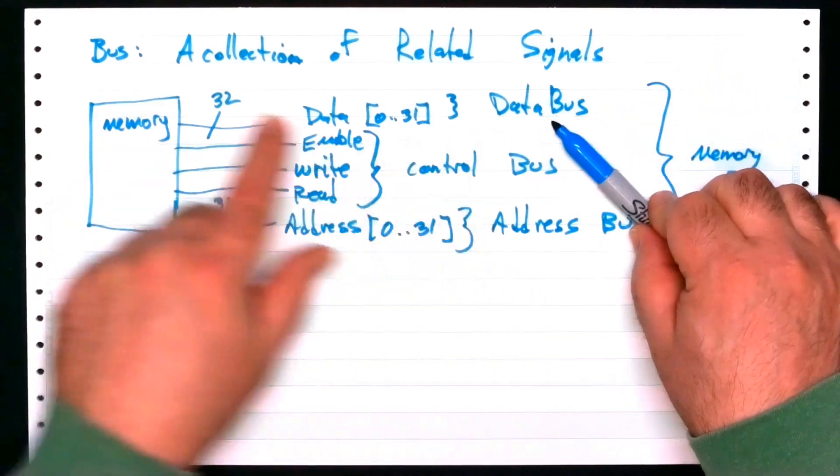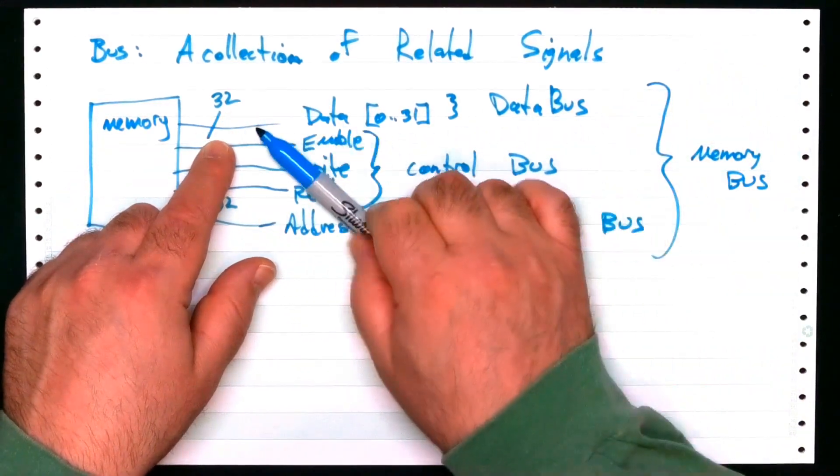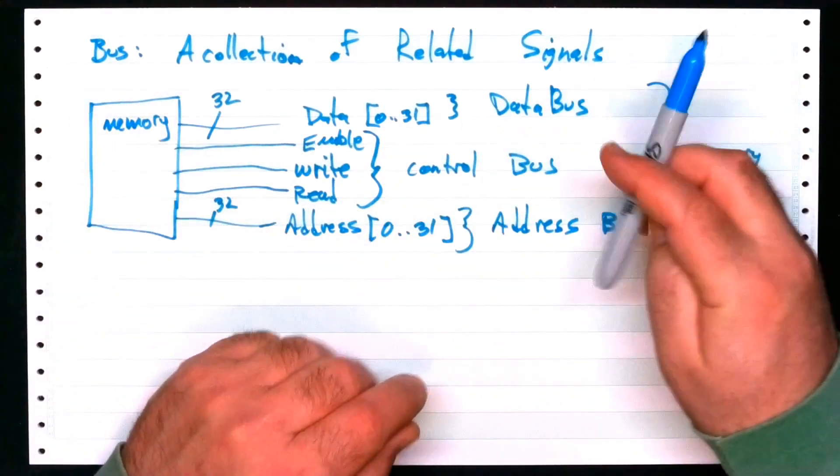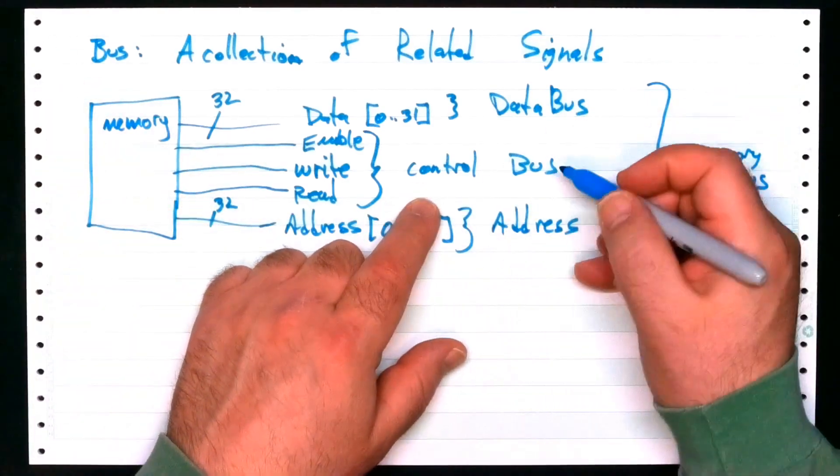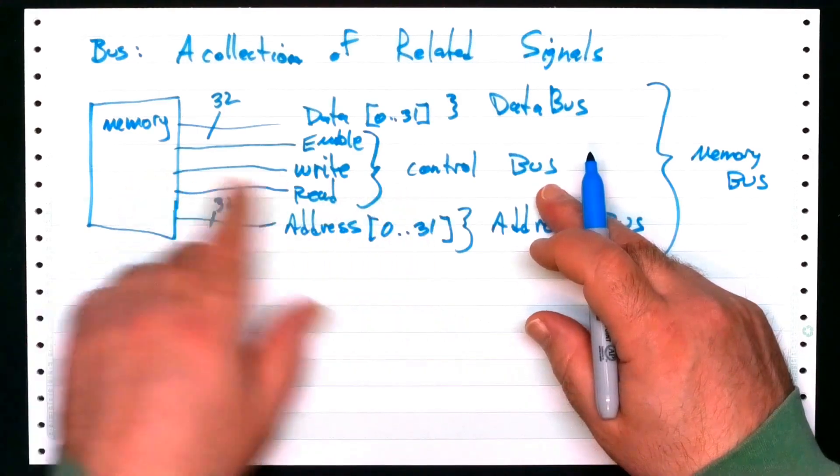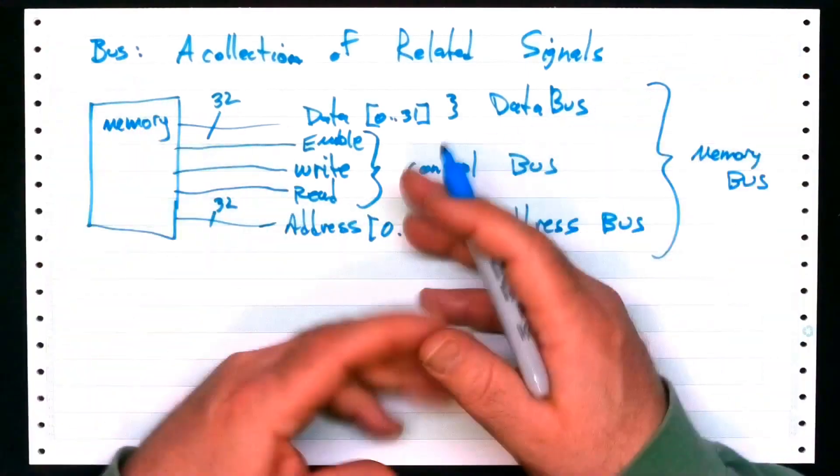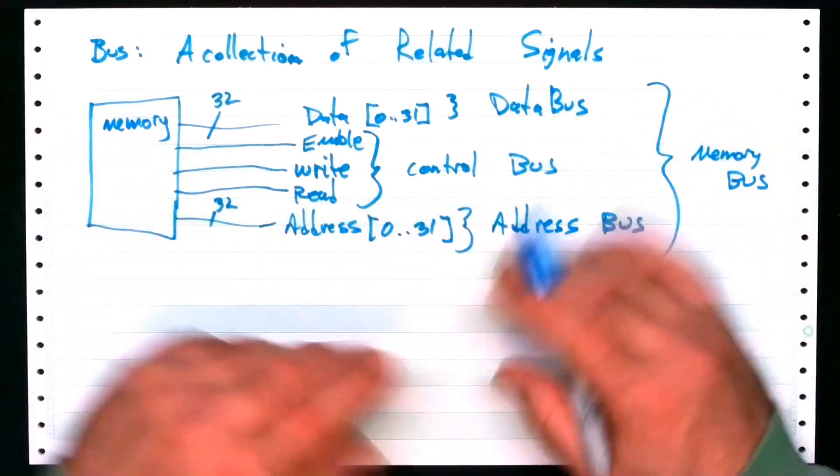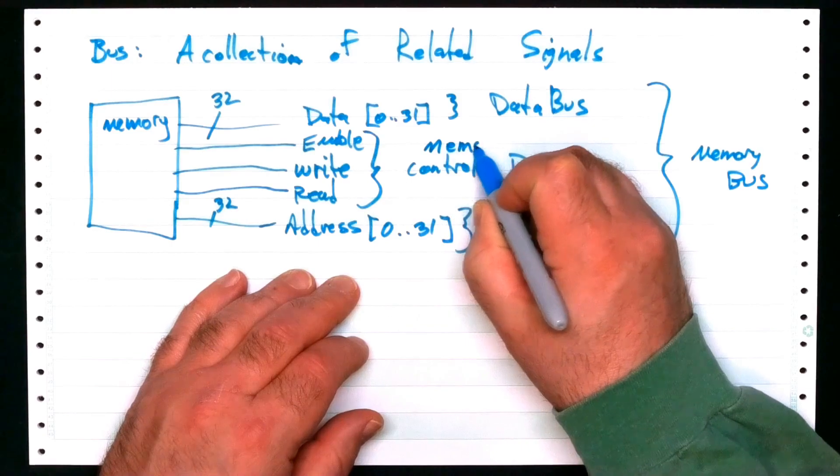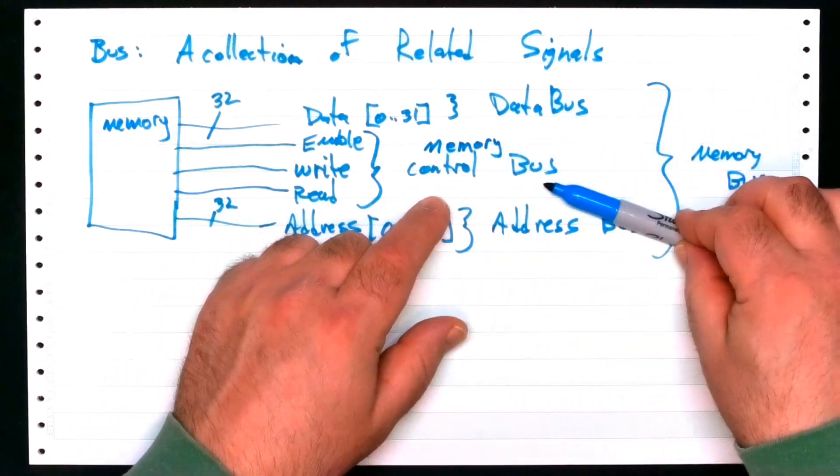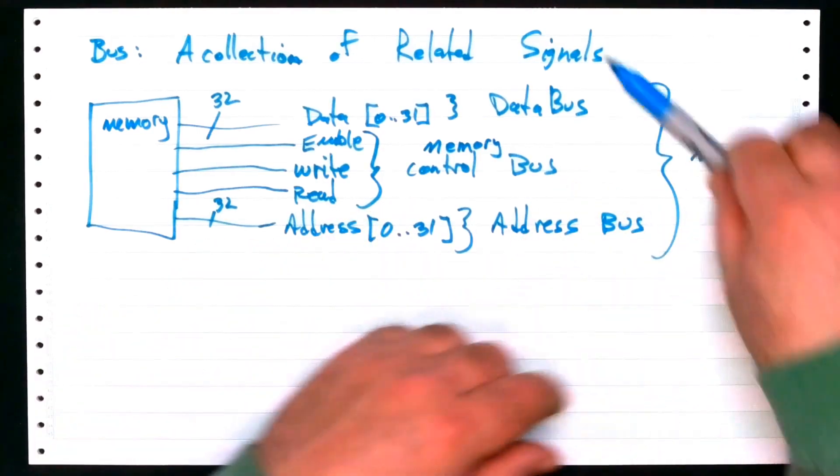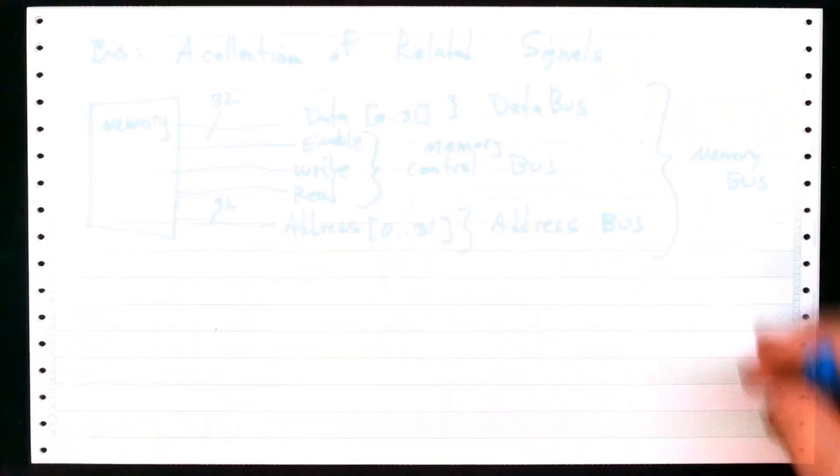You talk about the data bus, you're talking about these 32 lines. If we're talking about a control bus, we might not know which one because there could be other control buses. If we're only talking about memory and you say control bus to someone, they know you're talking about the memory control bus. You just give enough context so somebody knows what you're talking about. Here's your address bus. Memory bus is the collection of all of the above.